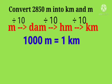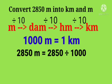So, 1000 meter is equal to 1 kilometer. Therefore, 2850 meter is equal to 2850 divide by 1000. Quotient is 2, remainder is 850.